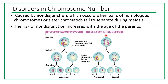If non-disjunction happens in meiosis 2, then in meiosis 1 homologous chromosomes separate fine. What failed to separate are sister chromatids in meiosis 2. Then some of the gametes can be normal (n and n), and some can still be abnormal — n plus 1 and n minus 1. For humans, n plus 1 is 24, n minus 1 is 22, and n is 23.